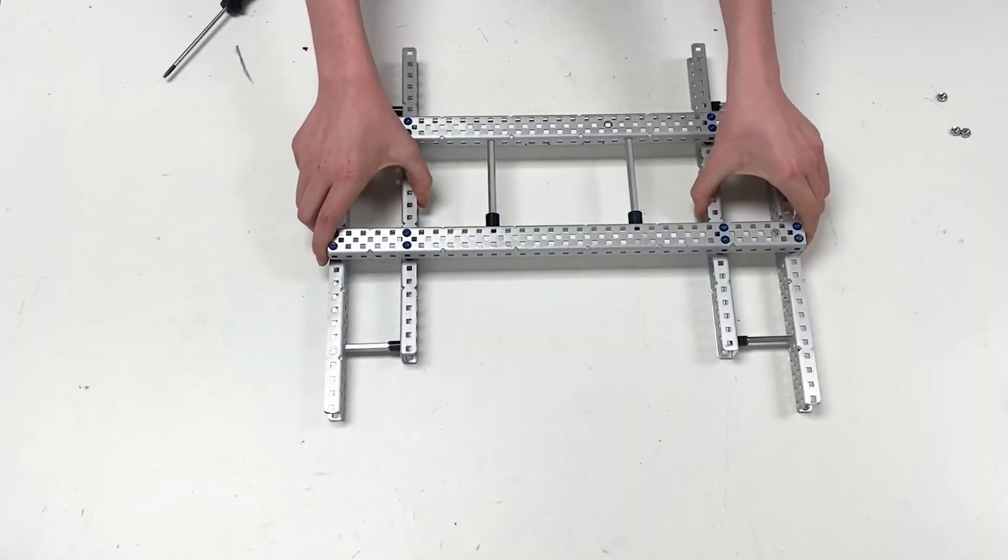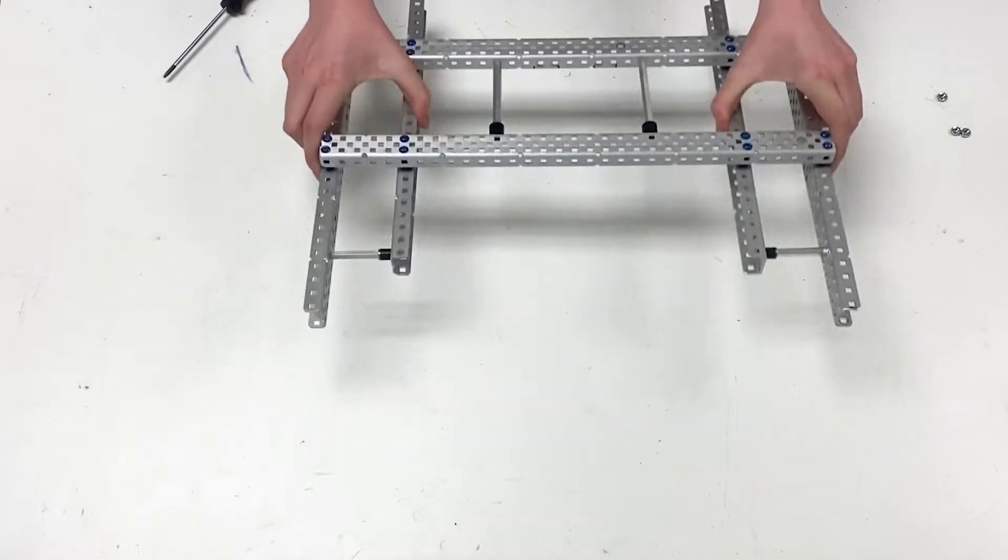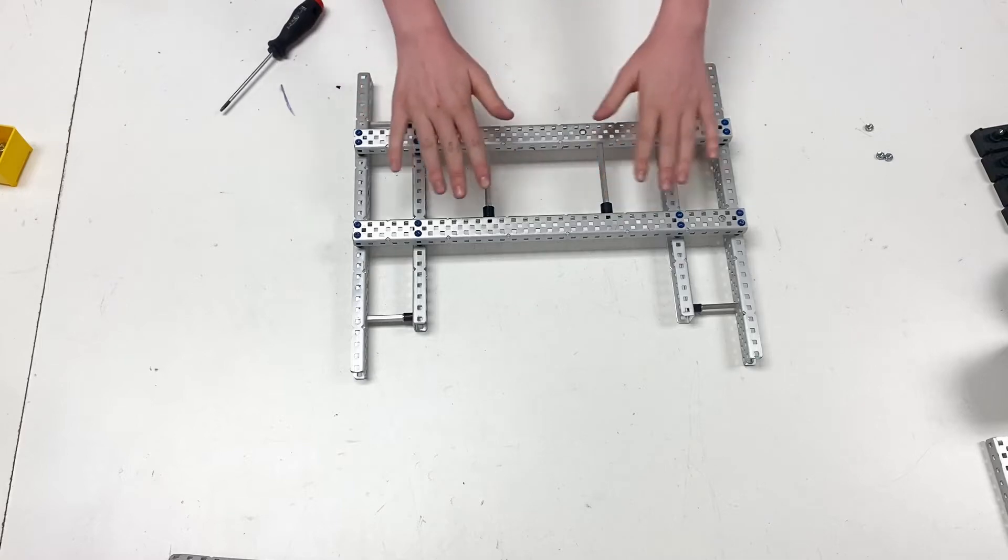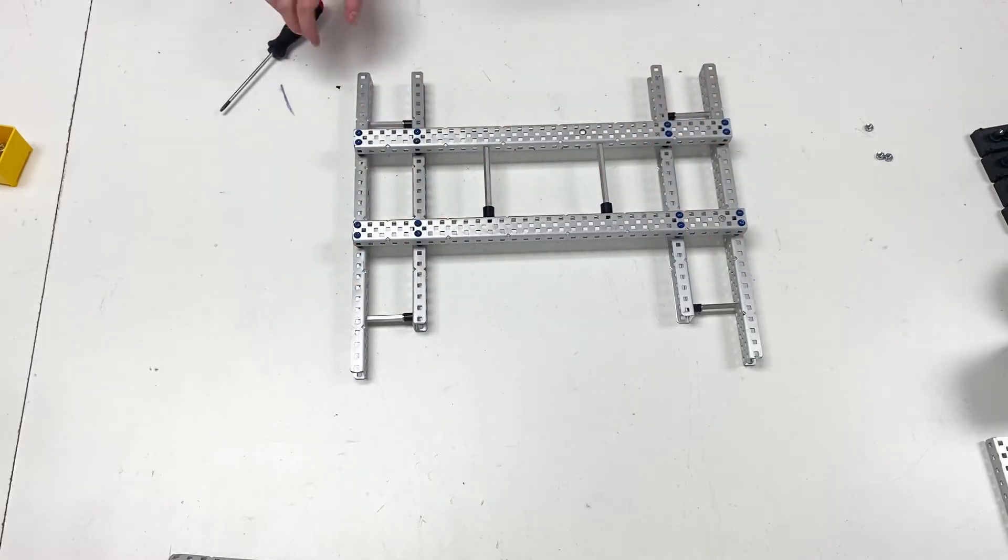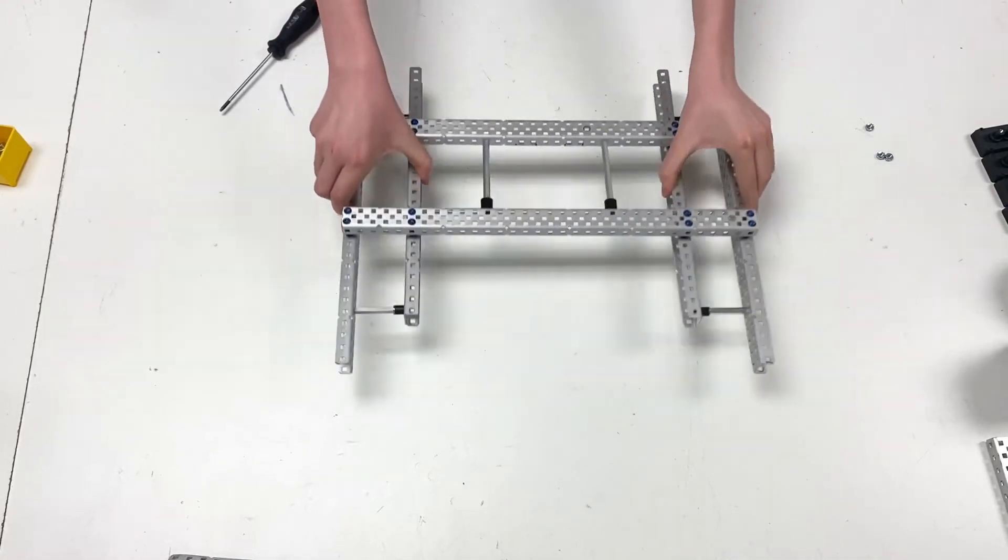So as you can see, I can move this around. It's a little tight because these standoffs are in here. It'll be looser by loosening these, but these standoffs do give a general idea of where the square would be.